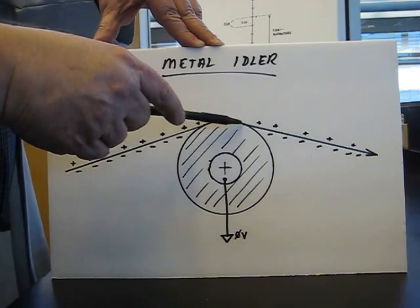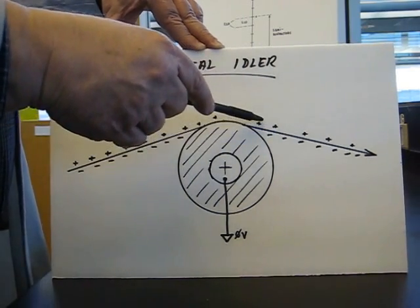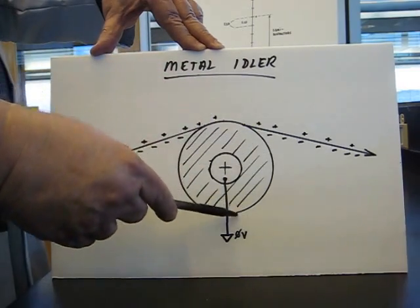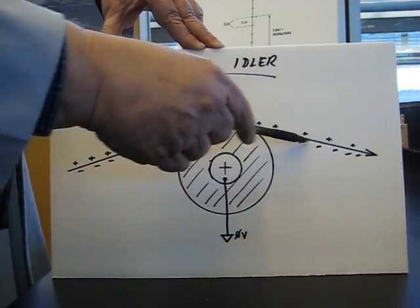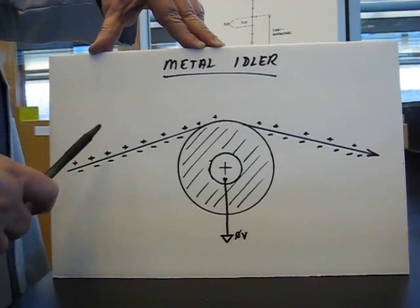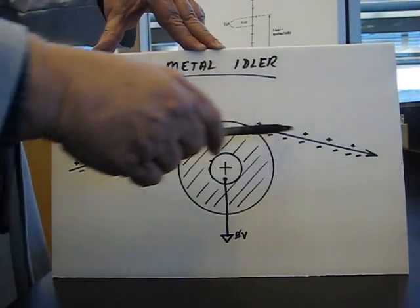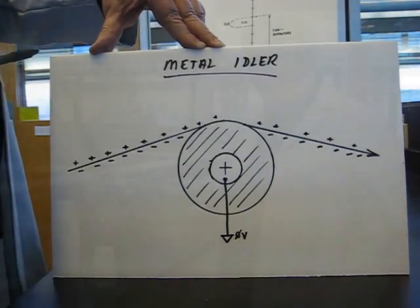Then as the web is departing from that roller, the plus charges here attract negative charges up from ground and recoat the web with charges. So there is almost no difference in the charges on the web as it goes over a metal roller.